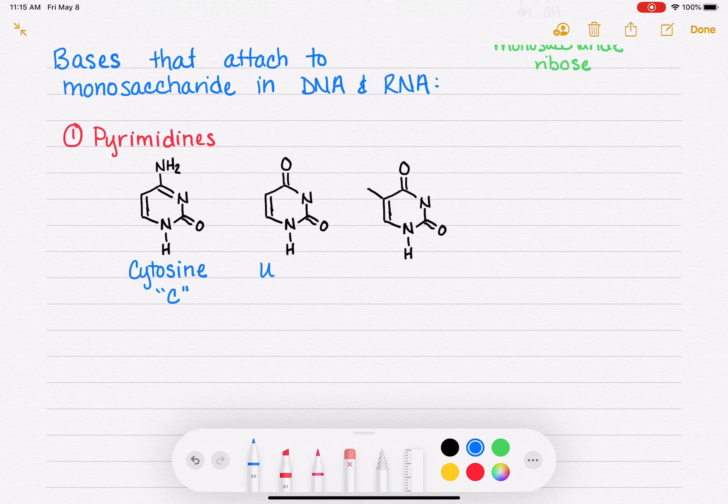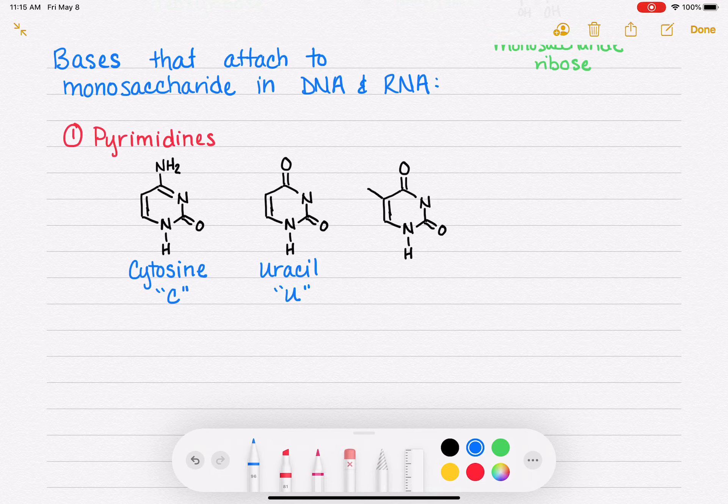The second one is uracil, which is abbreviated U. And the last one is thymine, which is, as you know, abbreviated with T.